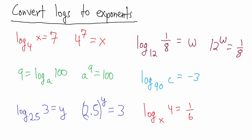Here we have the base 90 log of c equals negative 3. Base 90 means 90 is the base in exponential notation, and negative 3 is the actual value of the logarithm — so negative 3 is the exponent. That equals c, because c is all that's left. So 90 to the negative 3 equals c is how we convert that to exponential notation.